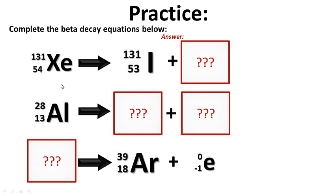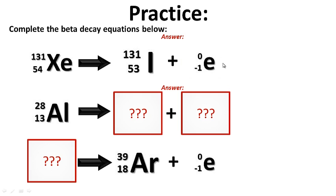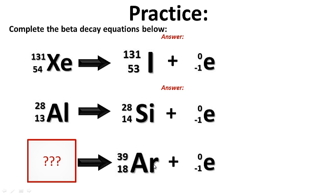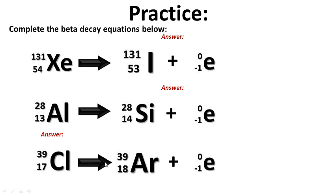Xenon gas will decay into iodine-131 and we get an electron — a beta particle. Aluminum will become silicon-28 and once again a beta particle is released. Working backwards this time — if chlorine-39 decays, it becomes argon and a beta particle is released. Hopefully you did pretty good on those.